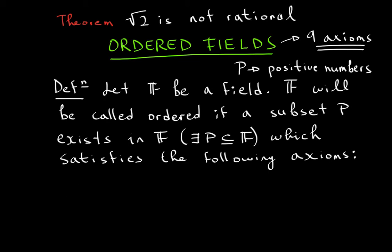There are three axioms and I'm going to talk about all three of them. The first one says that if x and y are an element of that subset P, think about positive numbers, so if x and y are positive, then if you add them, their result will be in the positives.